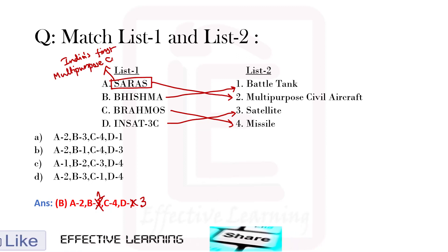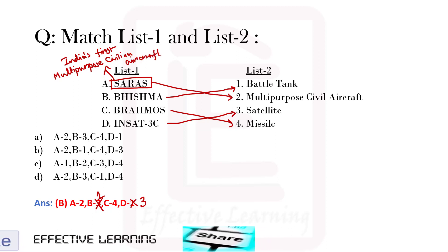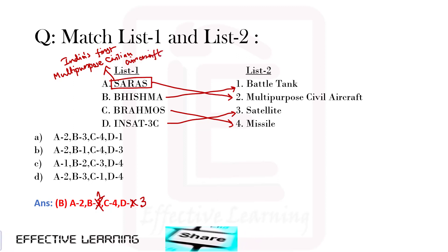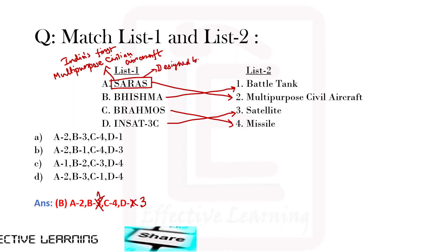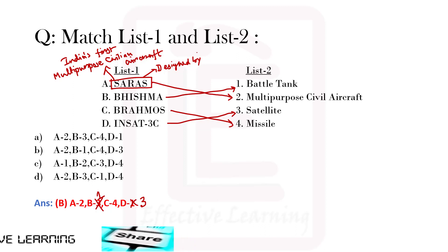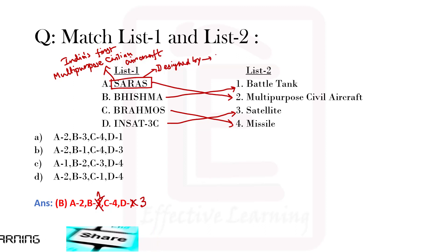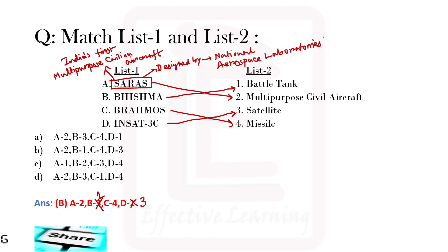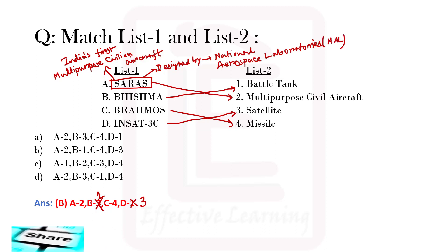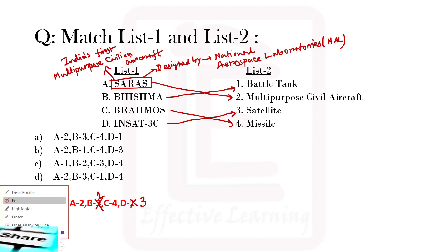The first multipurpose civilian aircraft is Saras. This is an important fact to remember. Saras was designed by the National Aerospace Laboratories, in short NAL. Saras is India's first multi-purpose civilian aircraft design.